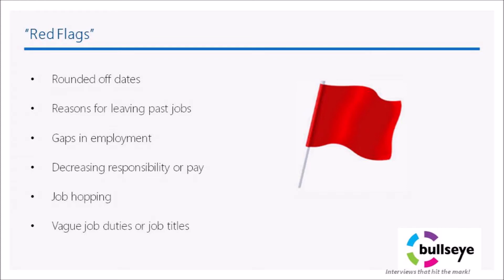Overly vague or general job duties or job titles are also red flags. For example, an applicant may write that he or she was responsible for contract administration. Explore this phrase further to determine what it means — the administration could have been obtaining a certificate of insurance or getting the contract signed. Similarly, different organizations may use the job title 'administrative assistant' to describe duties ranging from a secretary to a mid-level managerial position. These red flags might be knockout factors or just topics you want to explore further.